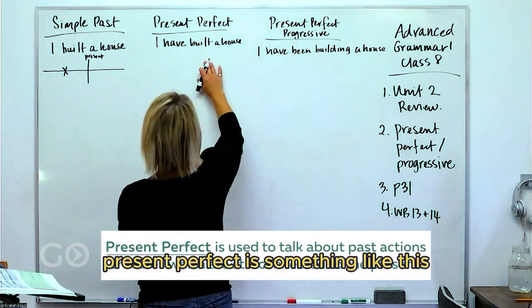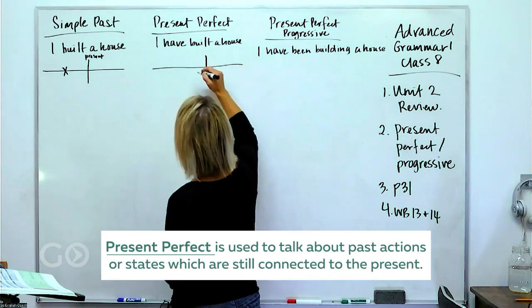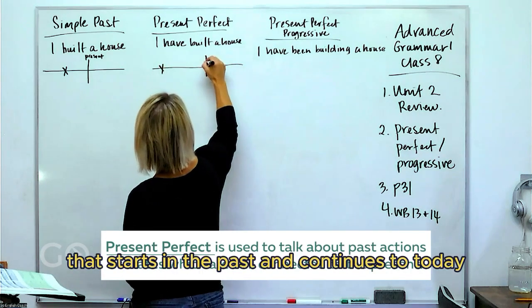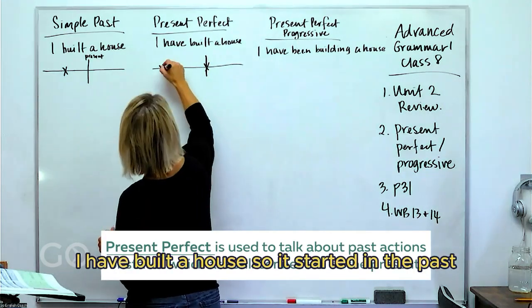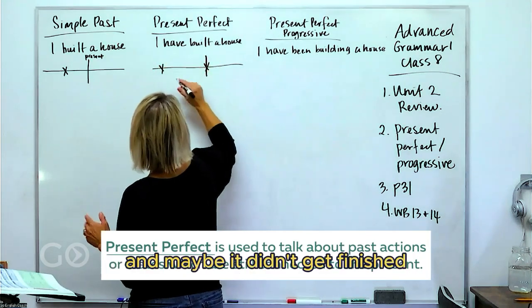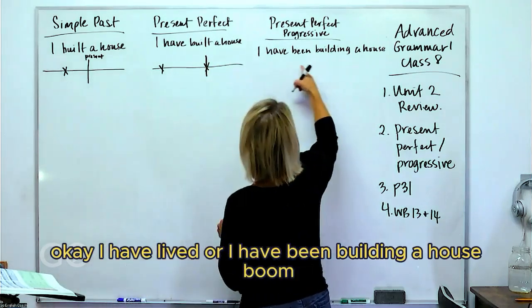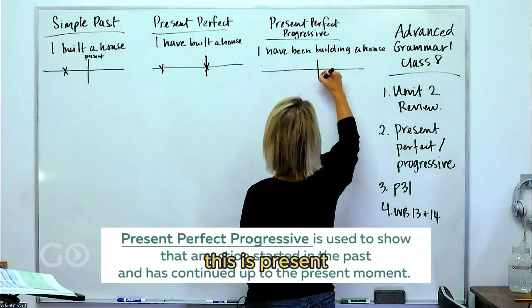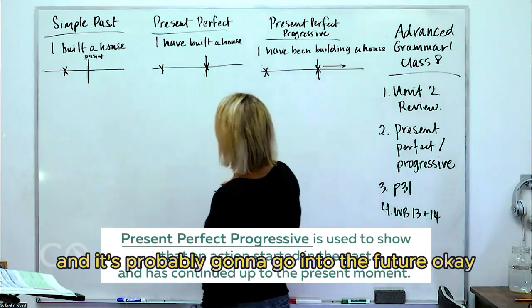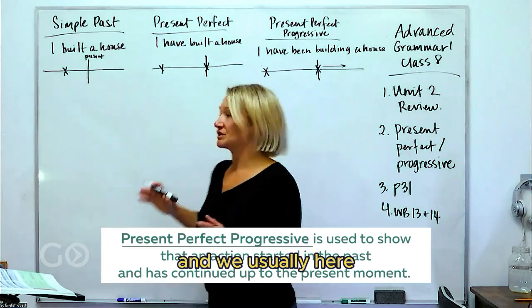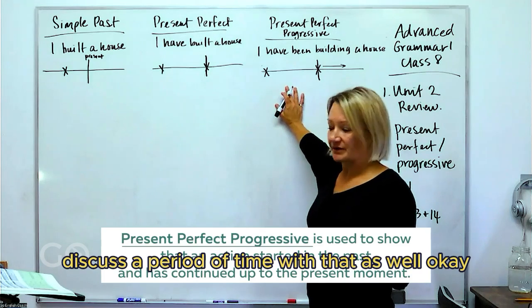Present perfect is something that starts in the past and continues to today, or it might have ended in the past as well. For example, 'I have built a house' — that started in the past and maybe it got finished. Or 'I have been building a house' — that started in the past, has continued to today, and is probably going to go into the future. We usually discuss a period of time with that.